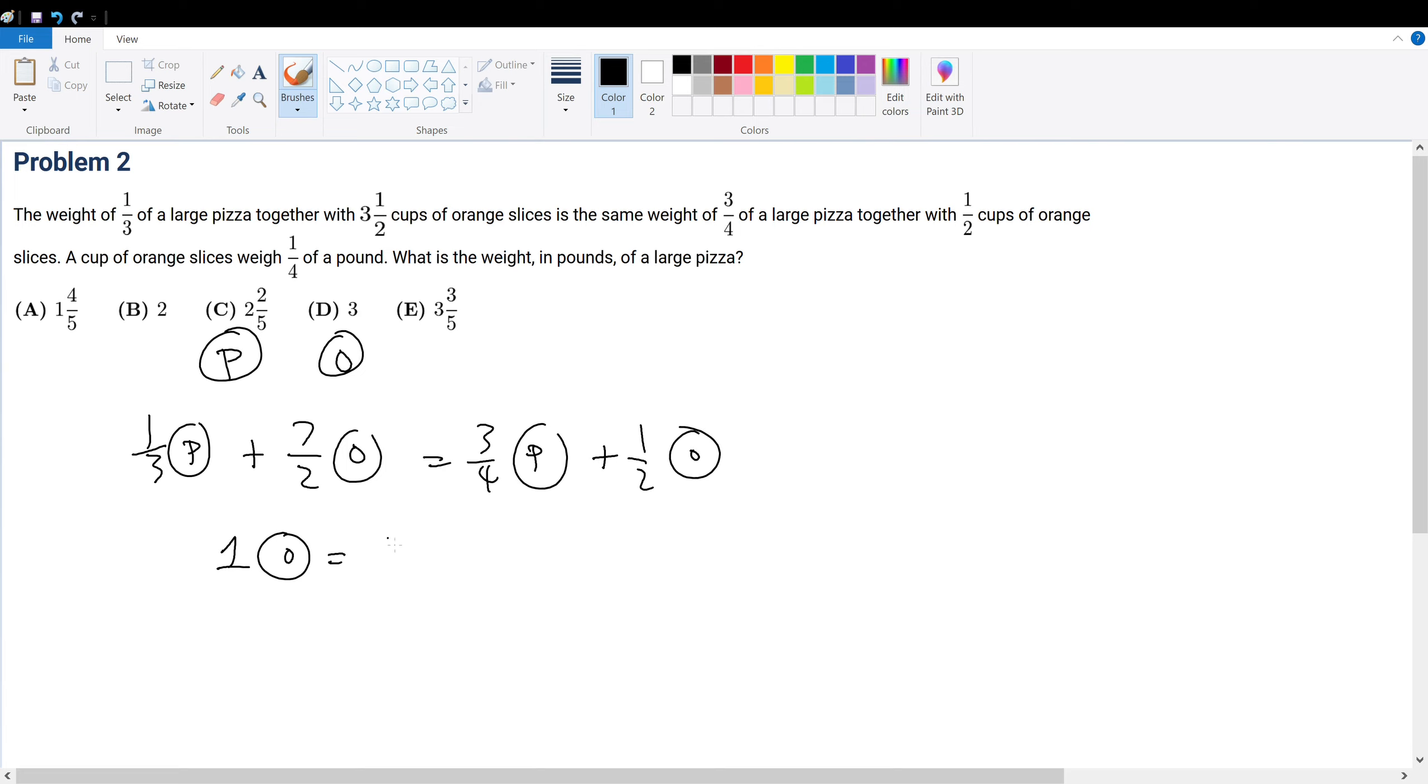So we're trying to find the weight in pounds of a large pizza. p is in units of pounds and o is in units of pounds as well, but we know the unit of oranges in terms of weight, which is pounds.